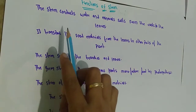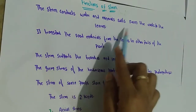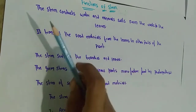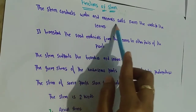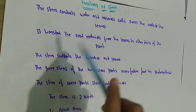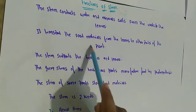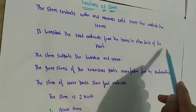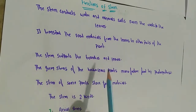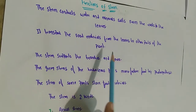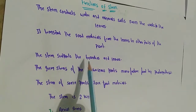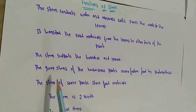Functions of the stem: The stem conducts water and mineral salts from the roots to the leaves. It also transports food materials from the leaves to other parts of the plant. The stem supports the branches and leaves.